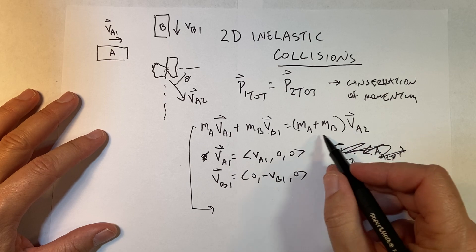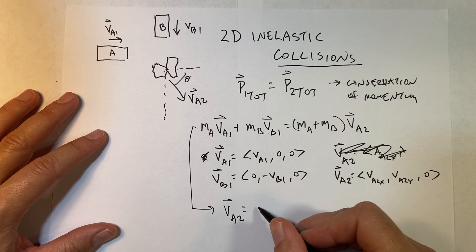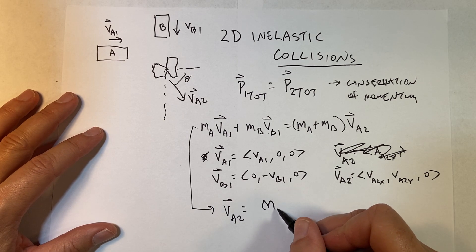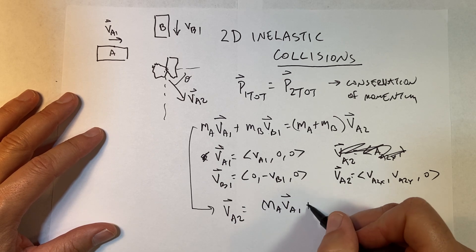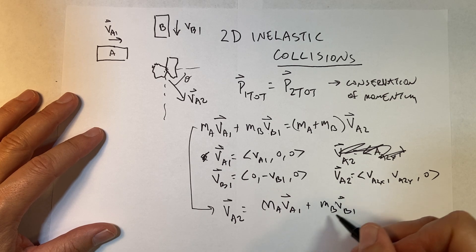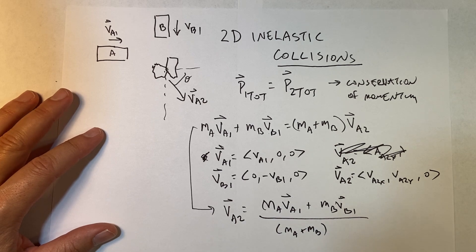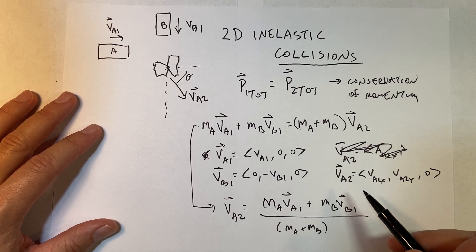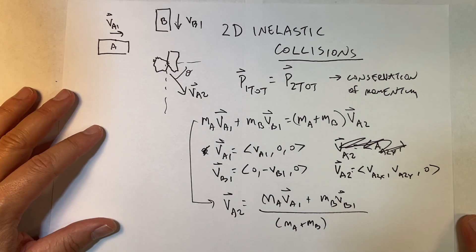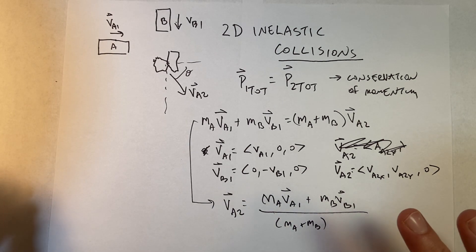I could solve—divide both sides by (m_A + m_B)—and I get v_A2 equals (m_A v_A1 + m_B v_B1) all over (m_A + m_B). Yes, it's that easy, right? Because it's a vector equation. If I deal with these as vectors, that's all I have to do. And it looks just like in one dimension, but those are vectors now, not scalars.